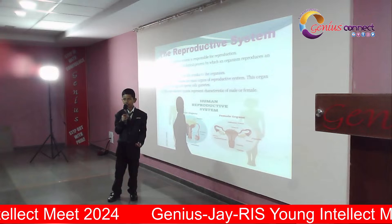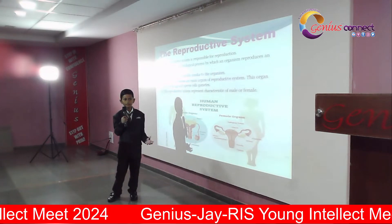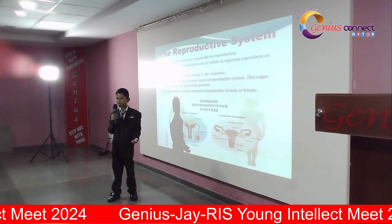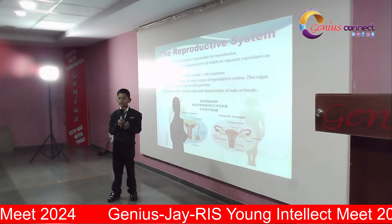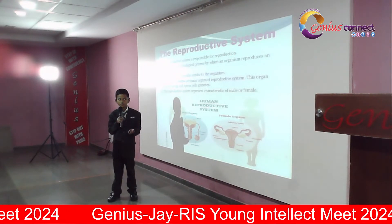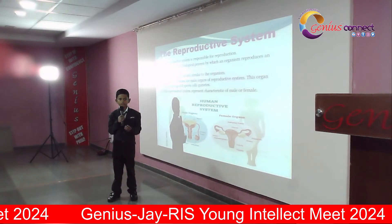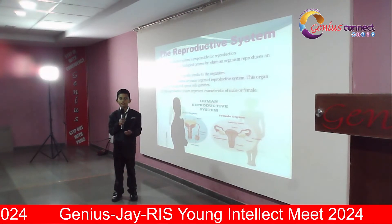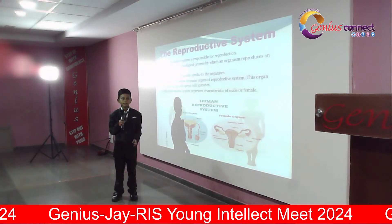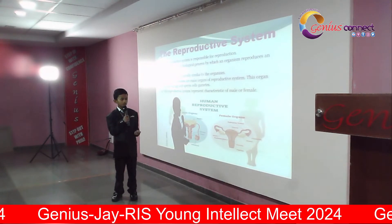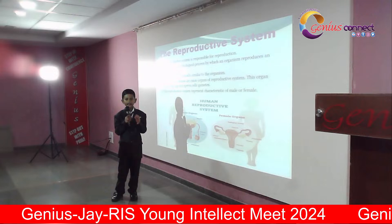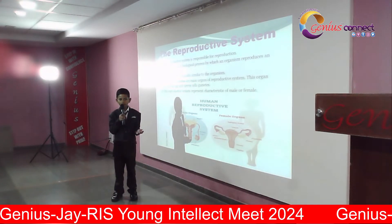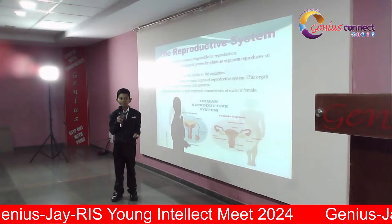The reproductive system is responsible for reproduction. Reproduction is a biological process when an organism reproduces an offspring that is biologically similar to the organism. Ovaries and testes are the main parts of the reproductive system. They produce eggs and sperm cells. The reproductive system also develops male and female characteristics.